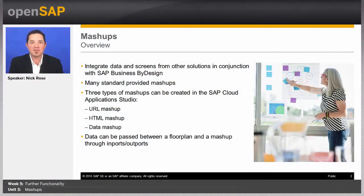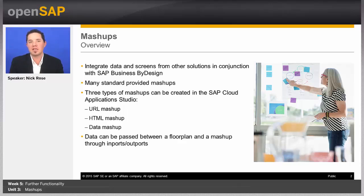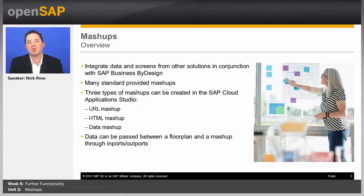Hello and welcome to week five, unit three of Application Development for SAP Business ByDesign. In this unit, we're going to be looking at mashups. We've already built many different screens of our own and extended standard screens. We looked at how to integrate other systems. Now we're going to look at using mashups to bring in data and screens from other systems in another way. Mashups allow us to not only integrate data from other systems, but even screens and views, and be able to embed them and use them in SAP Business ByDesign.